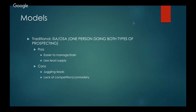The traditional ISA or OSA model has one person doing both types of prospecting. Typically, they call expired and withdrawn listings first thing in the morning, then do their follow-up, then log into all inbound leads — online registrations, sign calls, and so on. The pros: it's easier to manage and train. You've got one person doing both things, and the fewer people you have, the less complex your life will be. Communication increases exponentially with each team member added.